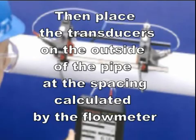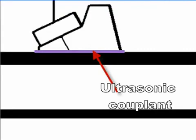We then place the transducers on the outside of the pipe, the spacing calculated by the flow meter. We also need to place an ultrasonic couplant between the transducers and the pipe because an air gap will stop the ultrasonic signal.